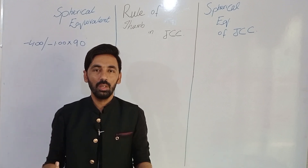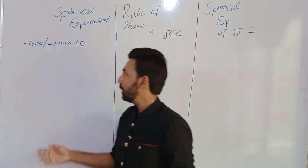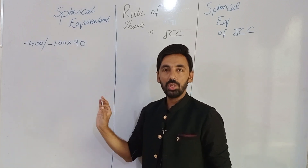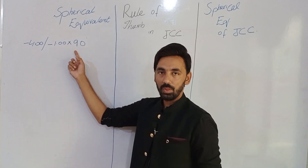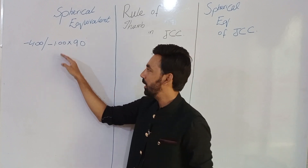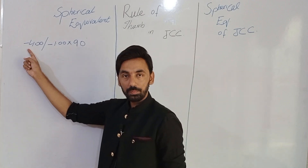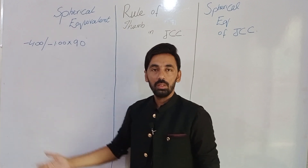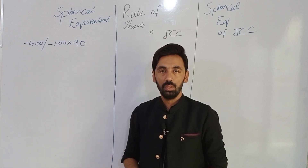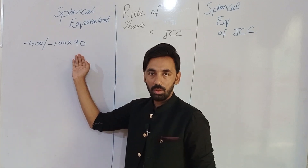If you prescribe a patient with minus four sphere and minus one cylinder at 90 degrees, and your patient is not comfortable with the cylindrical correction, then you will take the spherical equivalent. You will remove the cylindrical correction, and the residual of the cylinder you will add algebraically into the spherical correction, prescribing the result without the cylindrical correction.